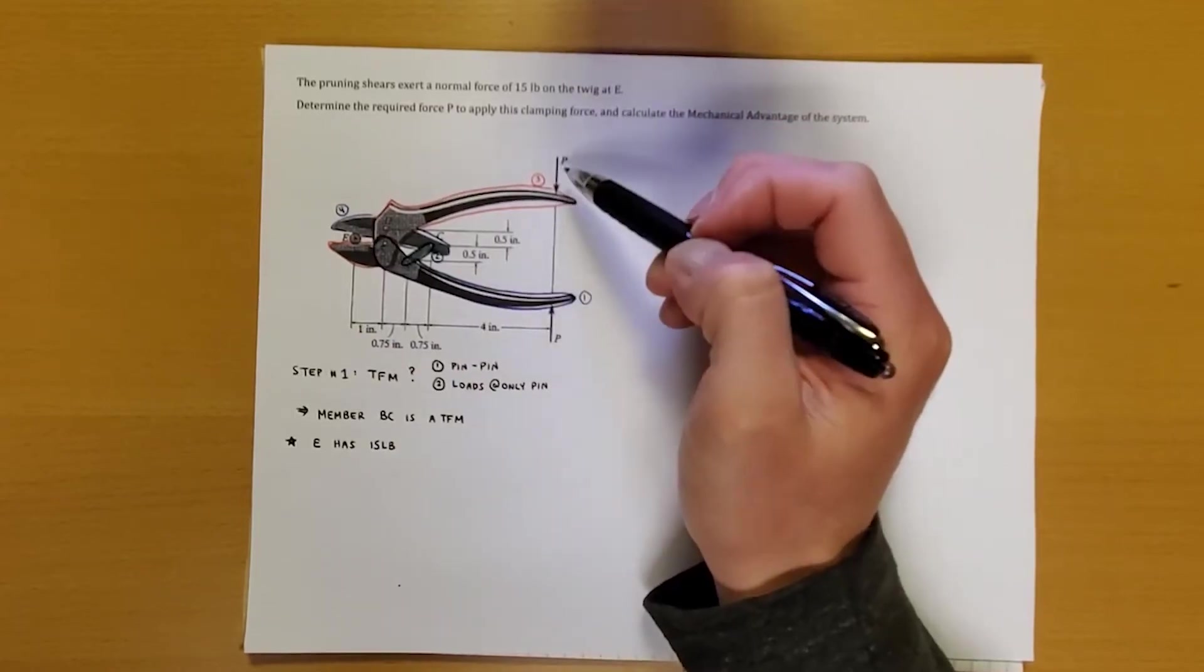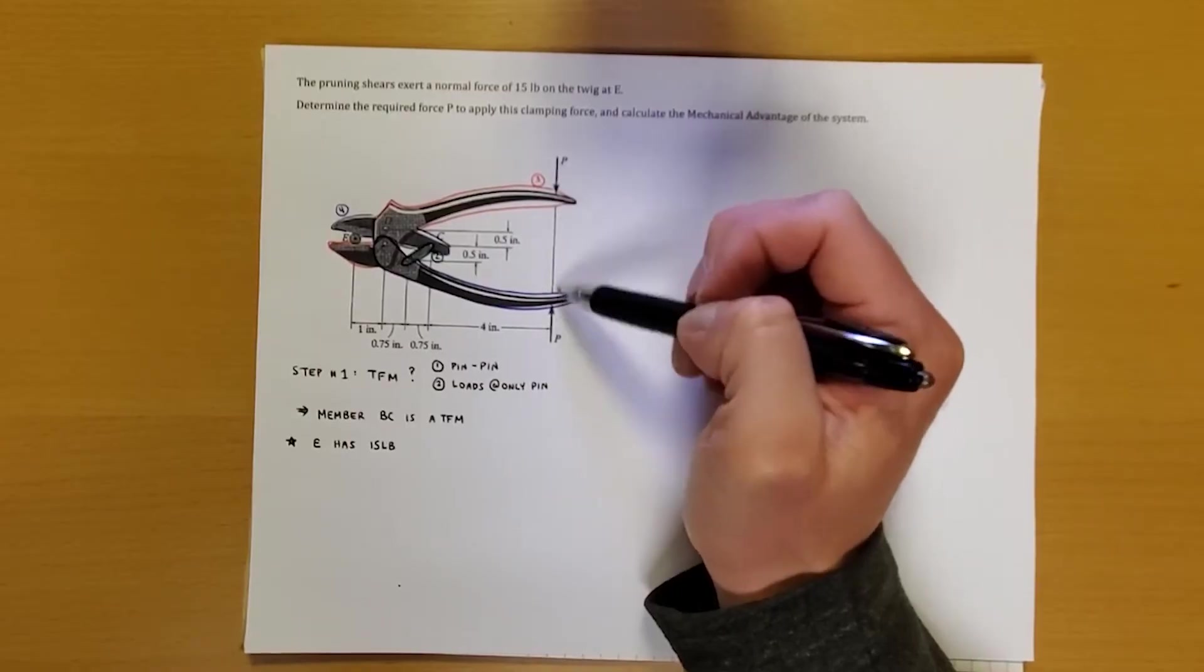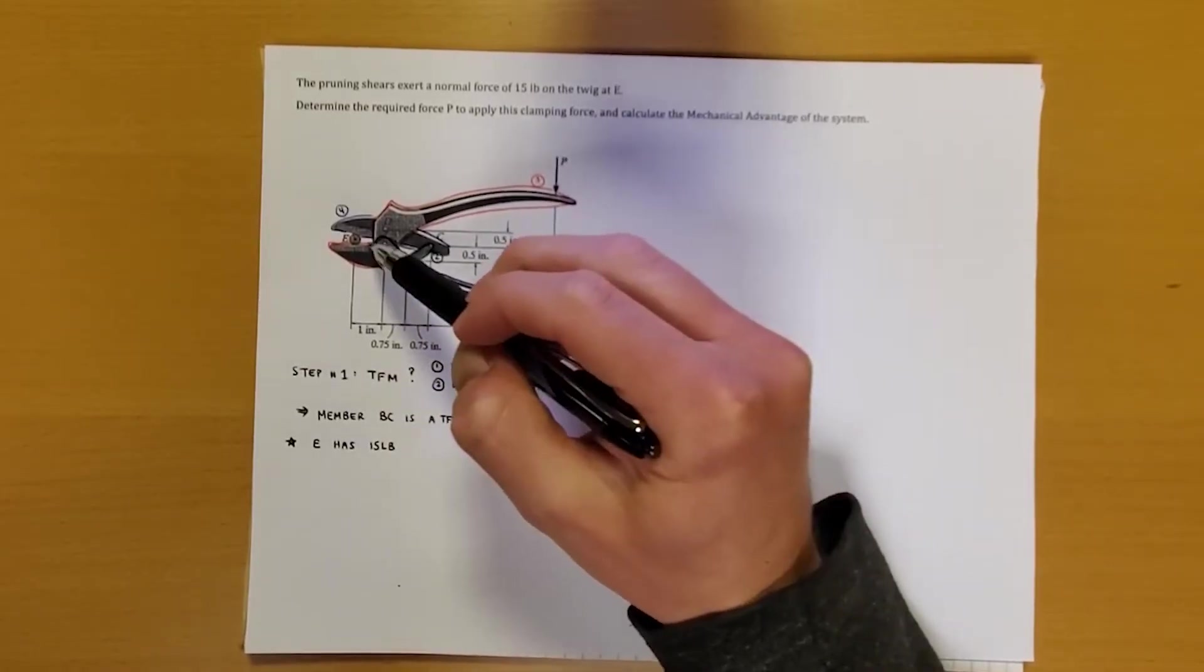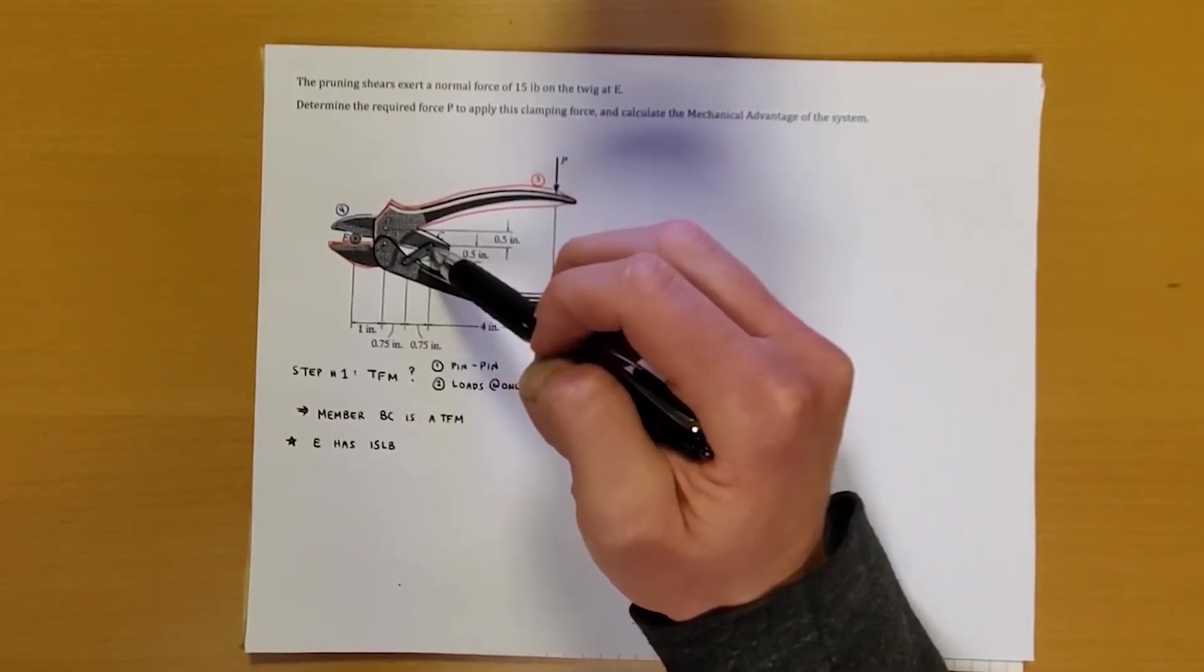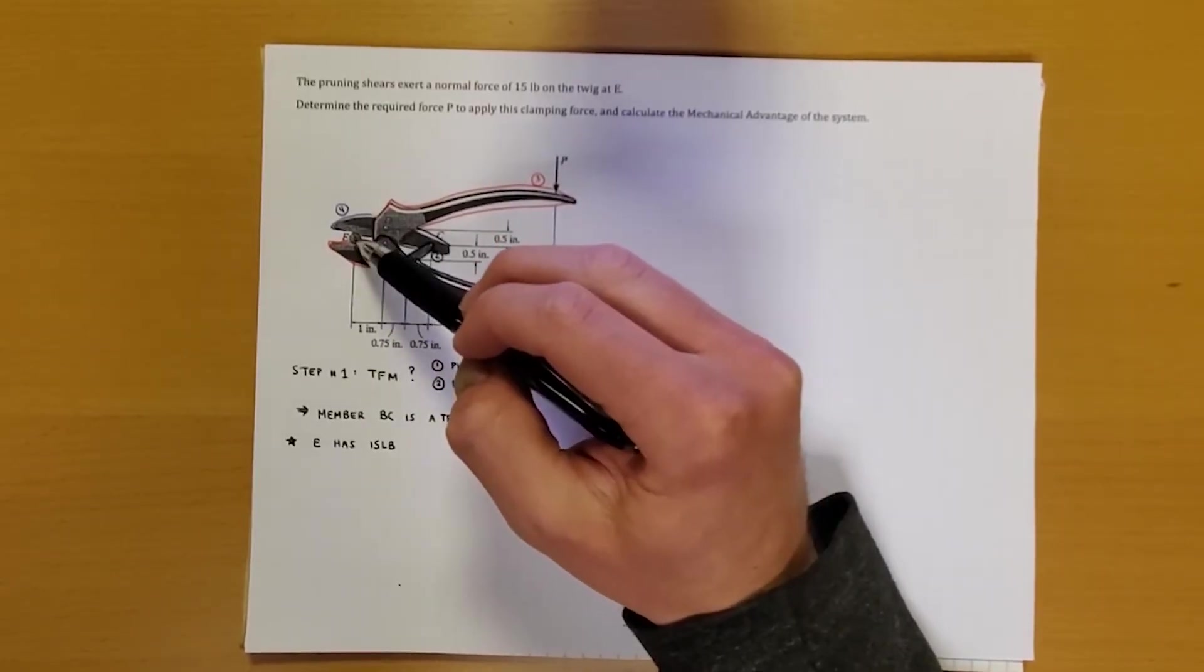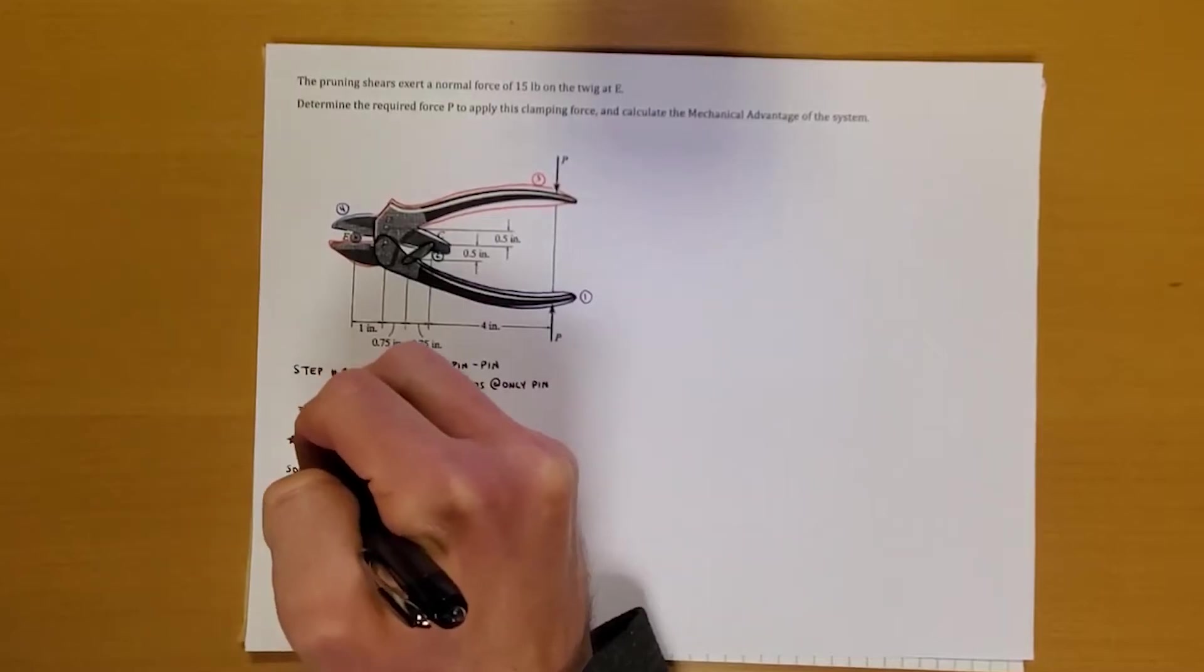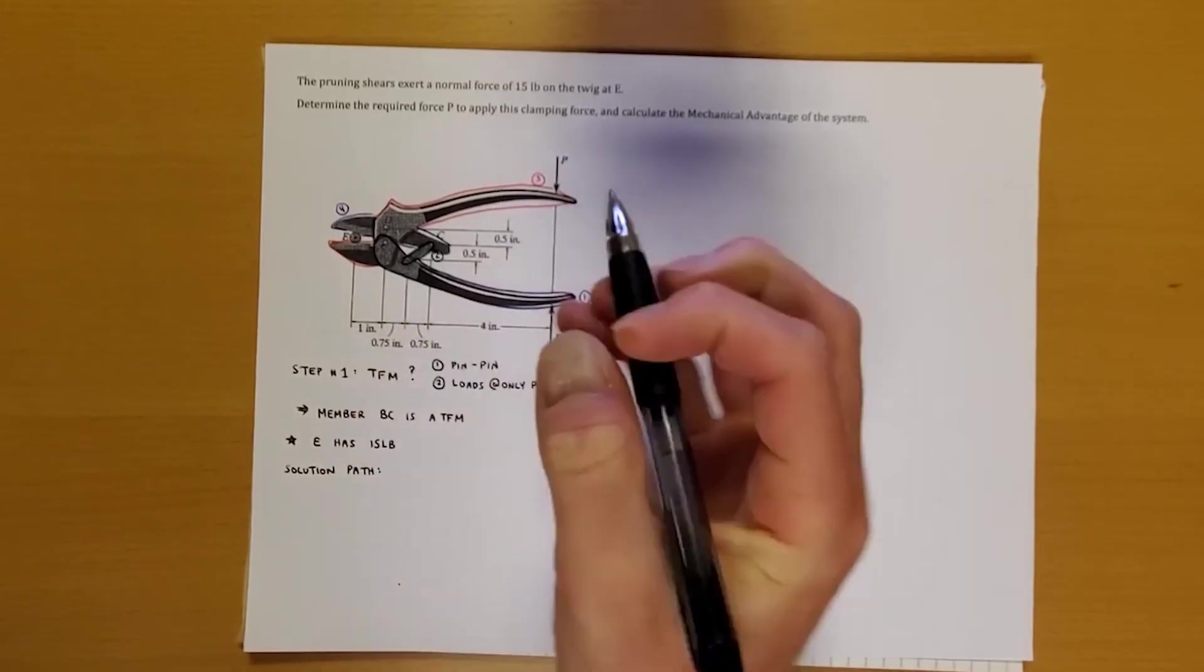Well, if we look at the two things that have P on it, it's one or three. Now, one of the benefits of looking at shape one is that shape one is touching our two-force member. So if we look at shape one, we can use the fact that this is a two-force member to solve things fairly quickly. And then if you look, the two-force member is also touching this top shear, which is actually touching E. So probably the best solution path for this problem is to go from shape one.